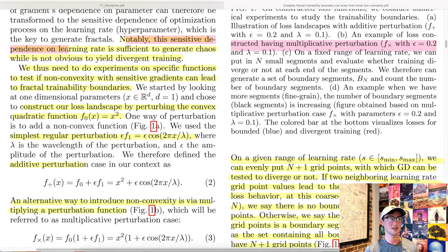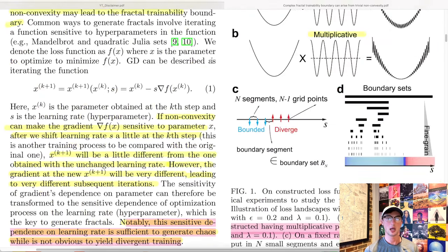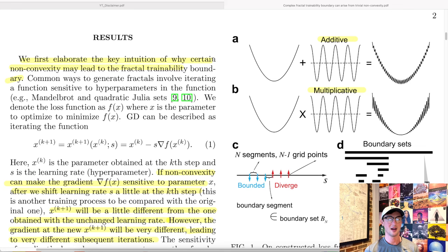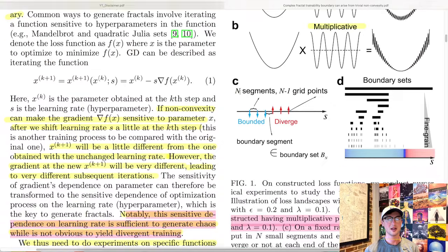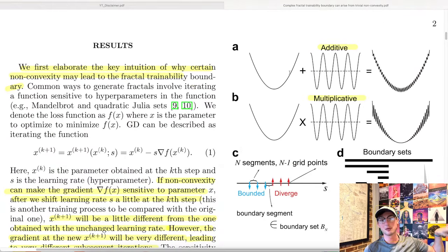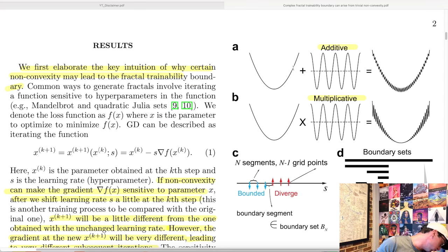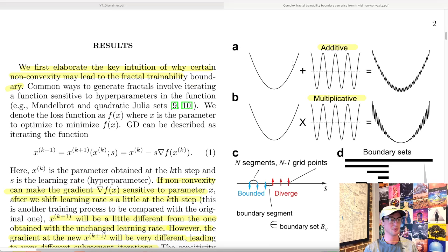Notably, the sensitive dependence on learning rate is sufficient to generate chaos, while it is not obvious that it yields divergent training. The previous paper did find divergence — where the loss actually went up and the model performed terribly — whereas given a certain level of non-convexity, the only thing you can guarantee is chaos: the model starts jumping around at different loss levels unpredictably. Divergence is a wholly more extreme phenomenon.